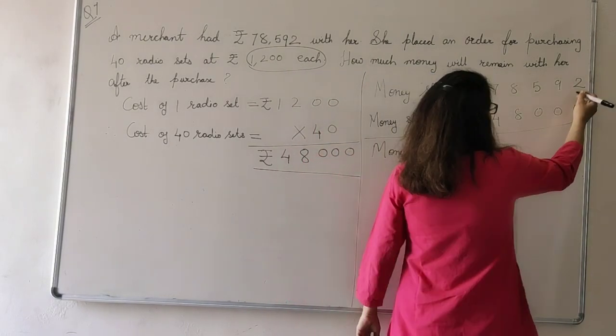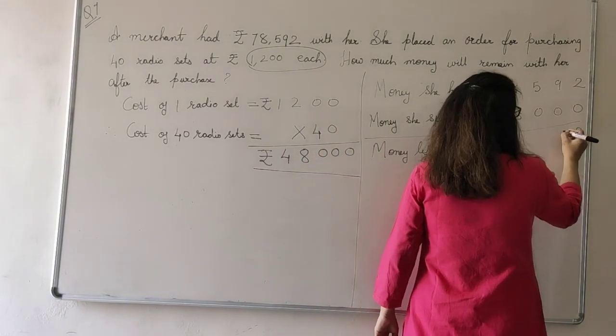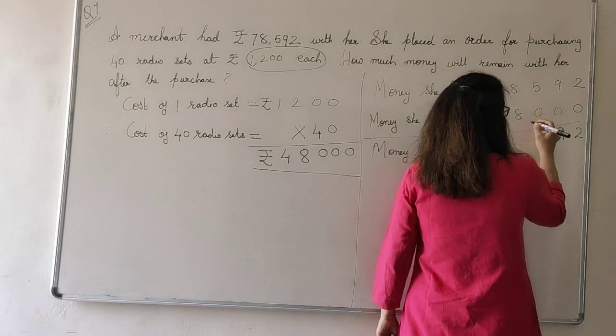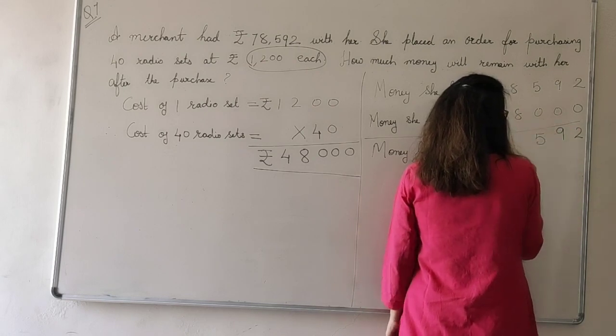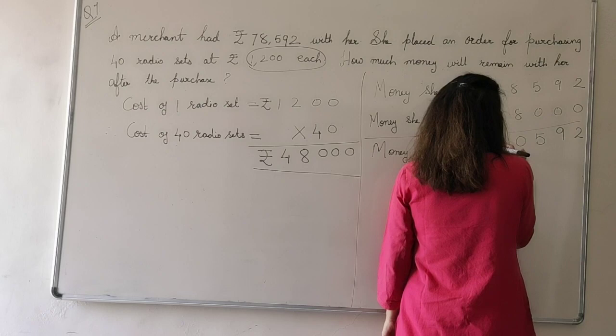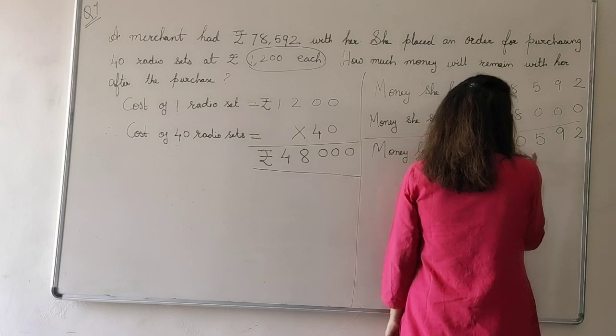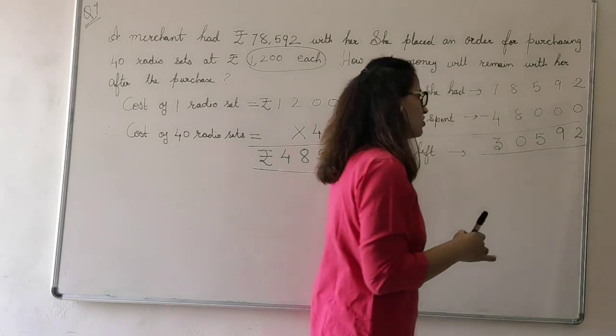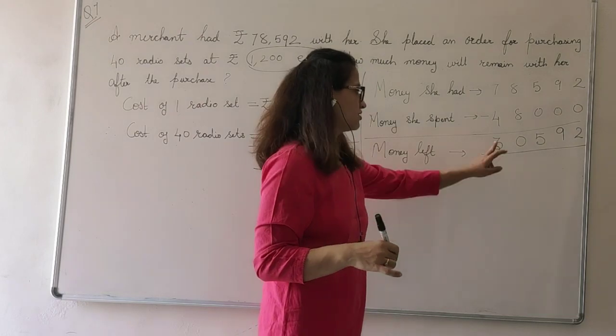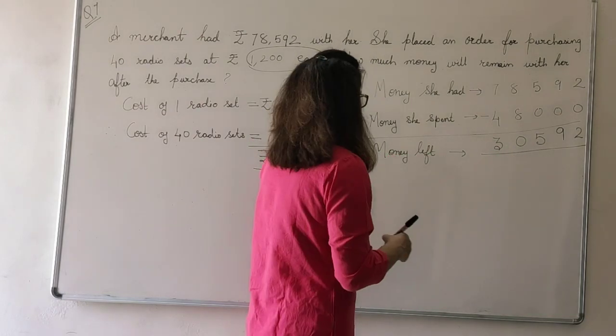2 minus 0 will become 2. 9 minus 0 will become 9. 5 minus 0 will become 5. 8 minus 8 will be 0. 7 minus 4 is 3. So, how much money she is left with? 30,592.